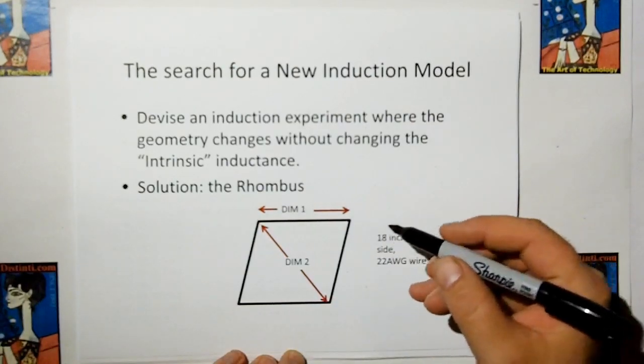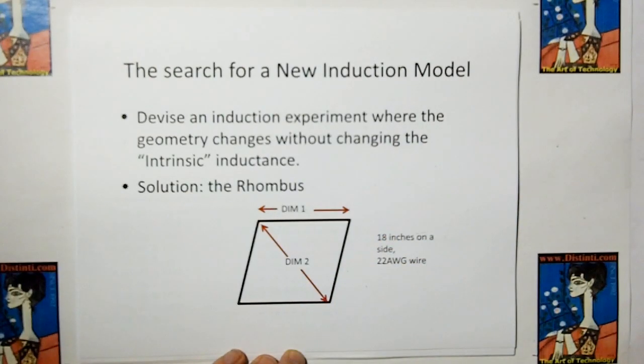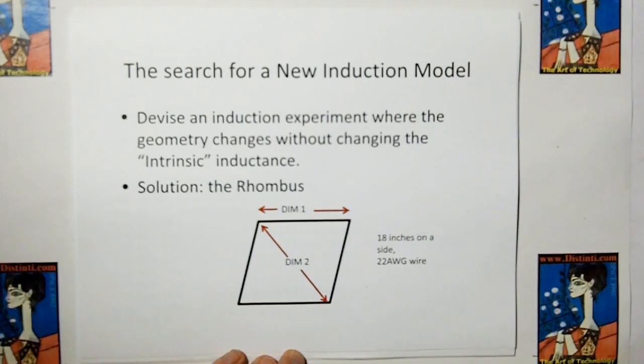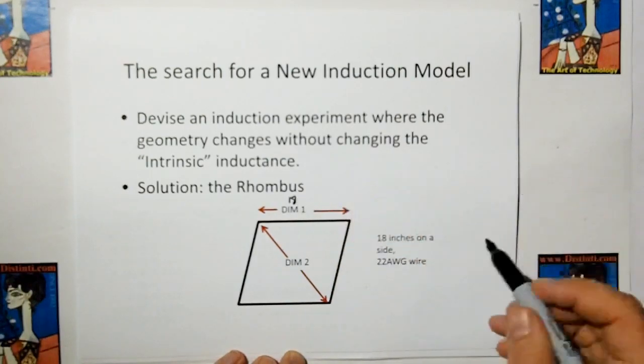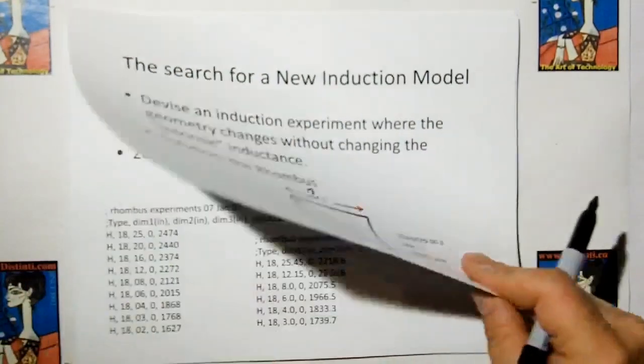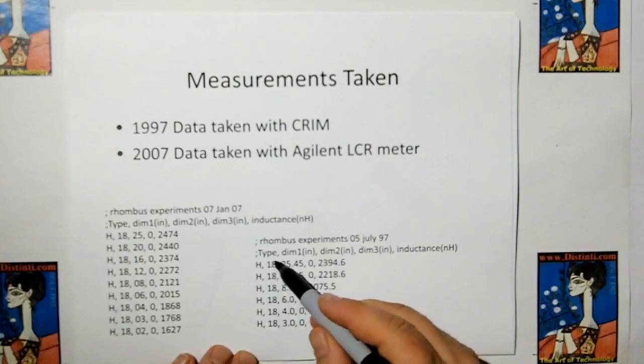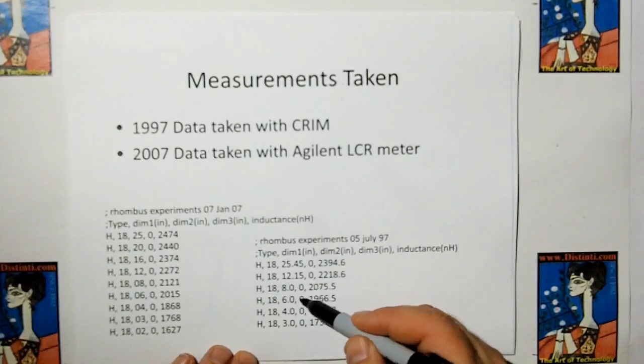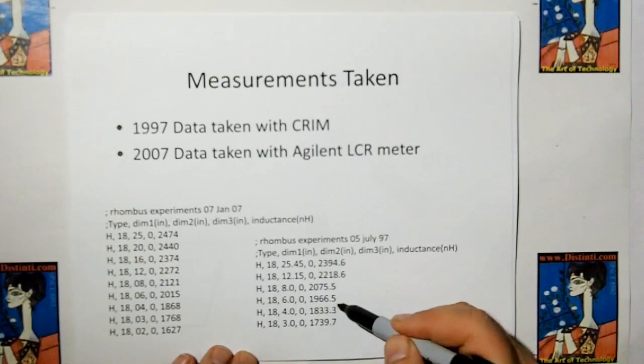Basically the experiment that was done, there was a lot of experiments before I came around to the knowledge that the intrinsic inductance was wrong. I believed it when I first started out, and it took me a while to realize that that was bogus. Anyway, these experiments were conducted with 18 inches on the side, DIM1 is 18 inches, with 22 gauge wire. And dimension 2 can be changed.